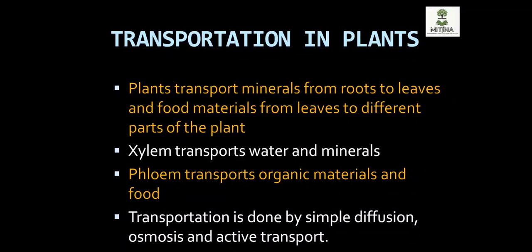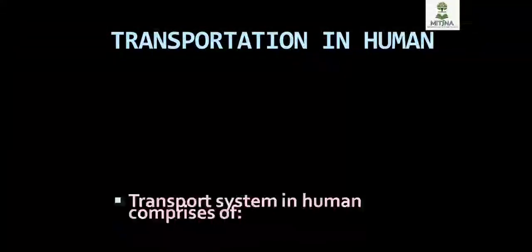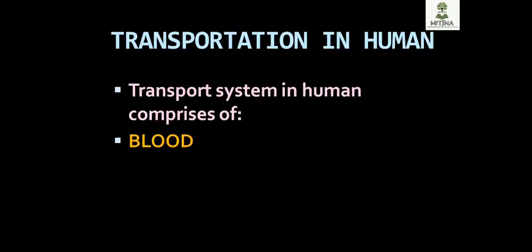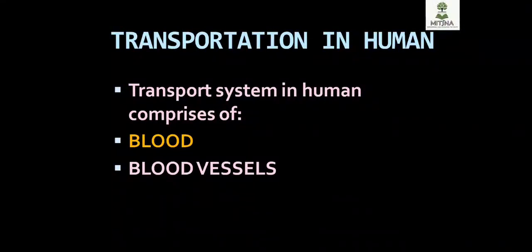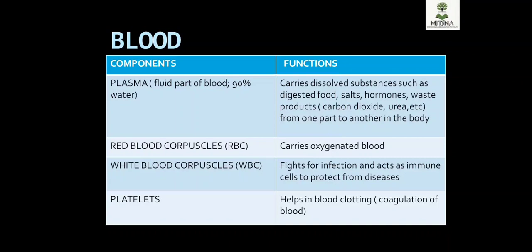In humans, transport is done by a transport system called blood, blood vessels, and heart. The watery part of the blood is called plasma.